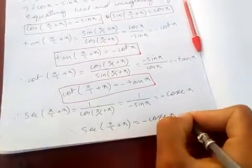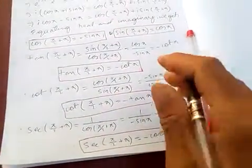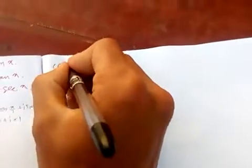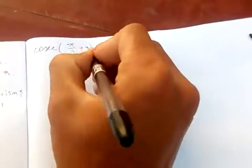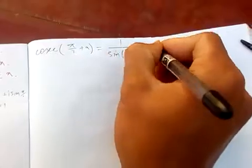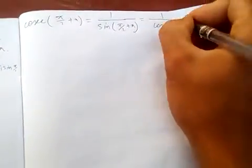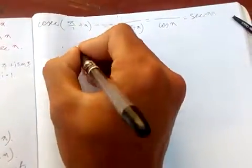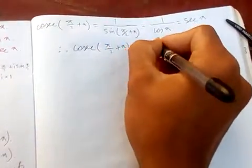So sec(90°+x) = 1/cos(90°+x) = 1/(-sin(x)) = -cosec(x). And for cosec: cosec(x) is the reciprocal of sine, so cosec(90°+x) = 1/sin(90°+x) = 1/cos(x). Therefore cosec(90°+x) = sec(x).